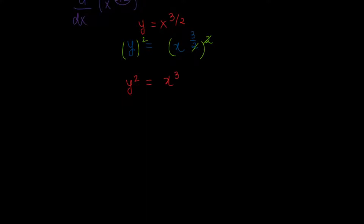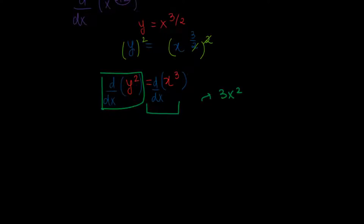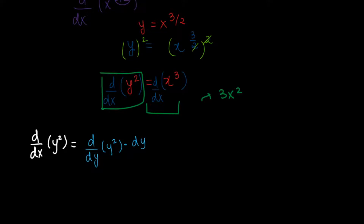This is now a bit more doable problem than the one we had before. Now we can apply d over dx on both sides: d over dx of y squared is equal to d over dx of x cubed. We know the right-hand side is just equal to 3x squared. On the left-hand side, we have d over dx of y squared, which we can write using the chain rule as d over dy of y squared times dy over dx.